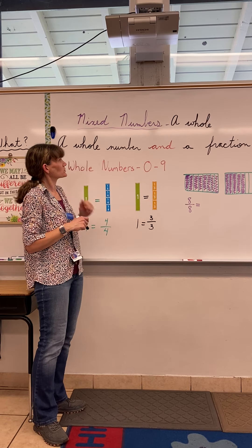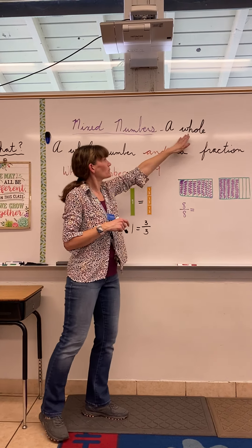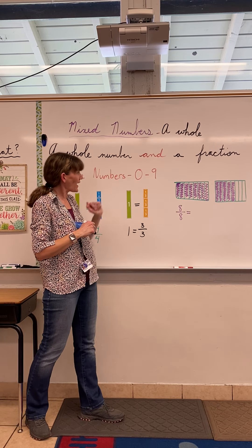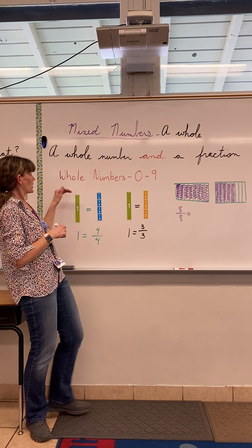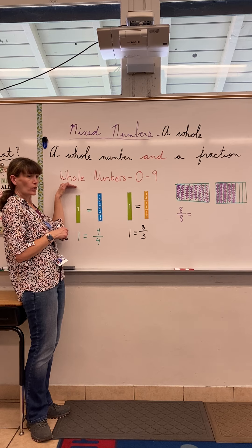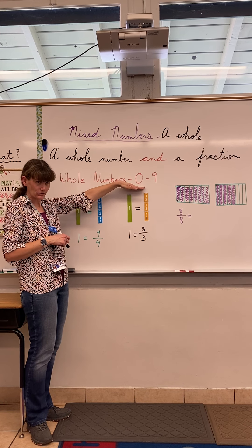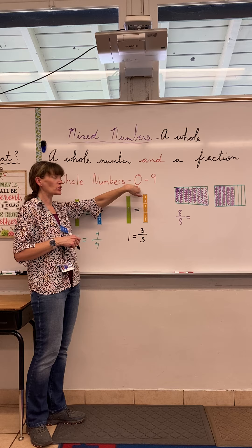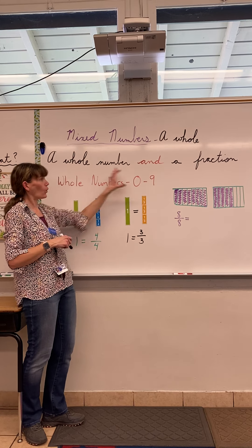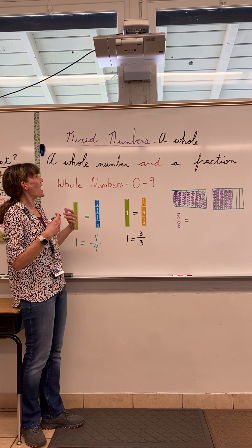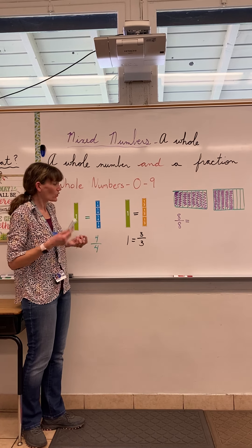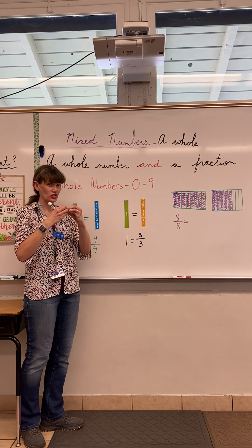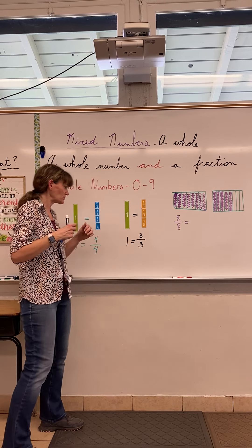What we're looking at again is mixed numbers. A mixed number is a whole number and a fraction. Remember our whole numbers — we're in base 10, that's the number system we use, so we use the numbers zero to nine. These are all our whole numbers, and then we add a fraction to them. So it's a whole number and a fraction together.